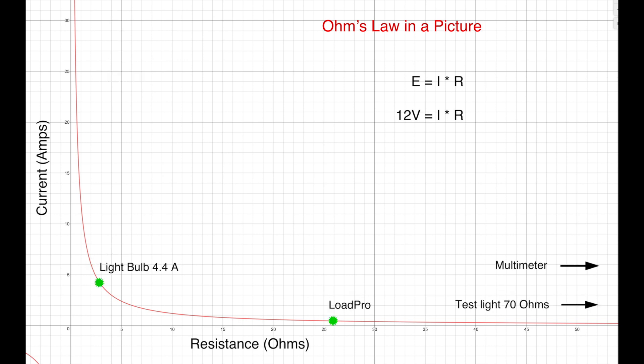Of course we can also use this graph to describe our tools. When set to measure voltage the multimeter is way off the chart to the right with about a million ohms built into the meter. An incandescent test light is usually a little better but even so mine sits off the scales with a 70 ohm resistance resulting in a 170 milliamp draw.